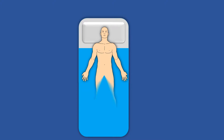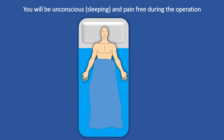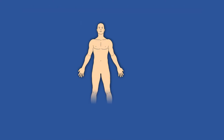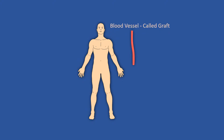If you need a coronary artery bypass graft, before the operation you will be injected a general anesthetic, meaning that you will be unconscious during the operation, which generally lasts between 3 and 6 hours. A coronary artery bypass involves taking a blood vessel from another part of your body, usually the chest, leg or arm, which is called a graft.